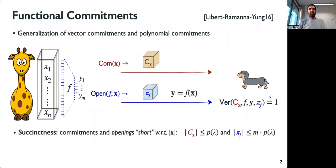The property that makes functional commitments an interesting and non-trivial primitive is succinctness. This informally says that the size of openings and commitments should be short with respect to the input size, and ideally should be constant.